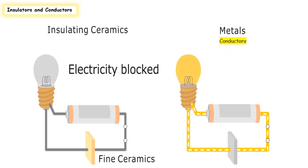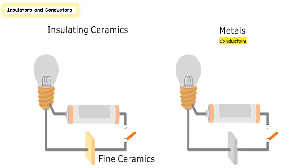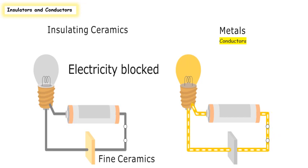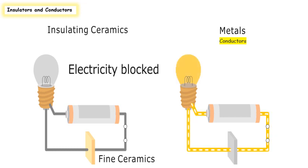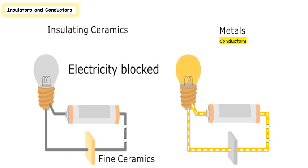Metals are conductors — they let electric charges move through them easily. When we close the switch, the light bulb is on, meaning the circuit is complete and nothing blocks the flow of electrons. Ceramics, however, are insulators — when we close the switch, the circuit is still incomplete and the light is off, confirming that ceramics do not allow electron flow.